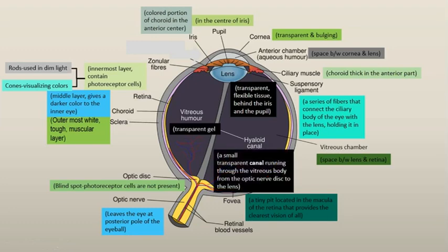The next structure is the hyaloid canal. It is a transparent canal running through the vitreous body from the optic disc to the lens. It is present during the fetus stage and as the baby grows it develops. It is used to supply blood to the lens and to other parts of the eye.